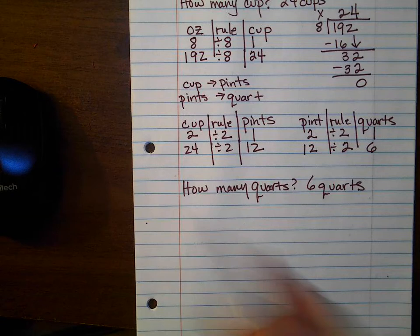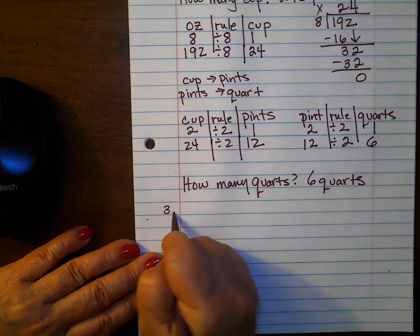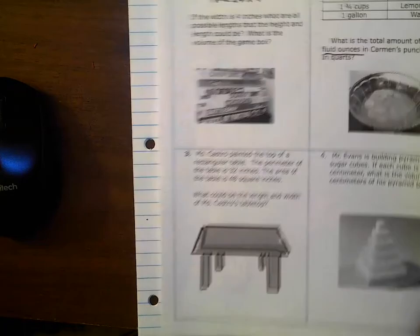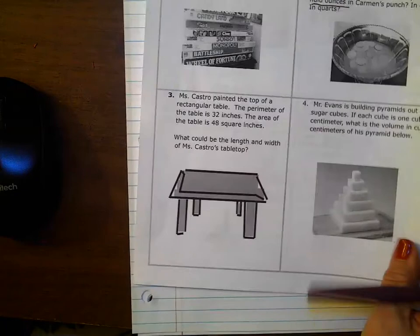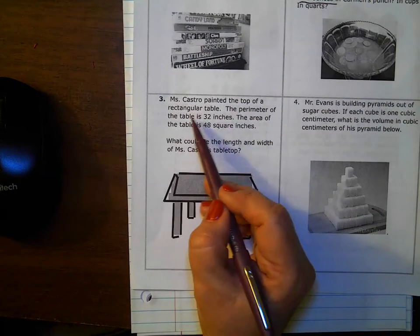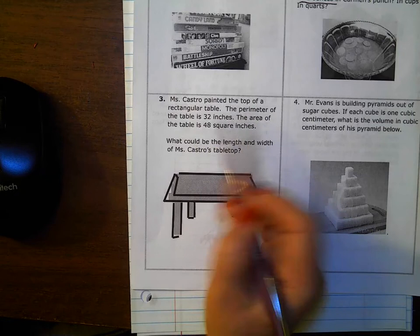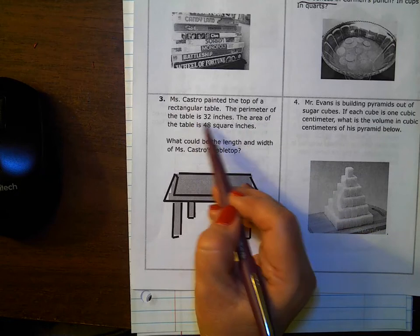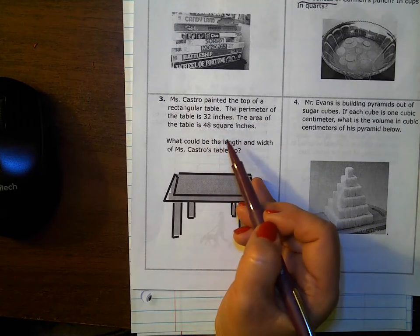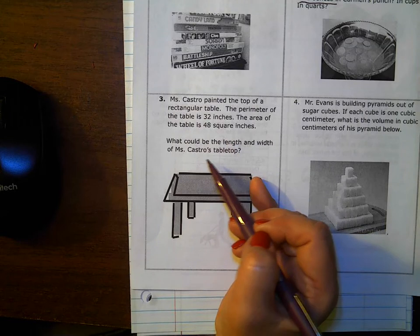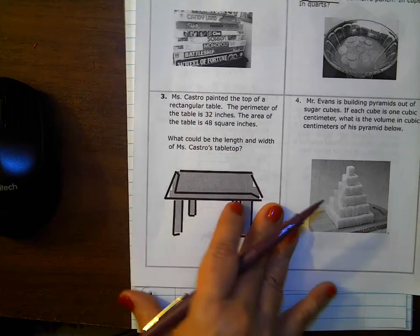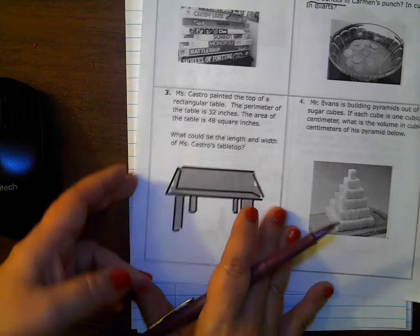Now let's go to question number 3. Number 3 reads that Mr. Castro painted the top of a rectangular table. The perimeter of the table is 32 inches and the area of the table is 48 square inches. What could be the length and the width of Mr. Castro's tabletop?